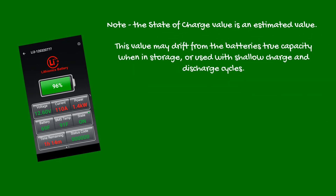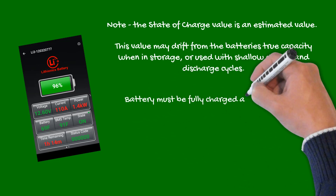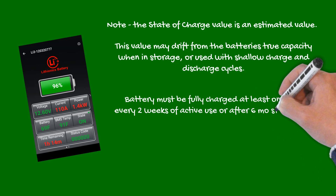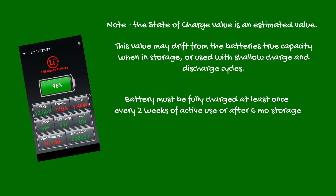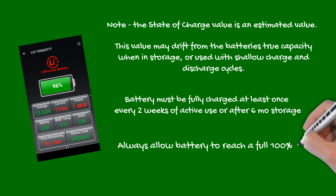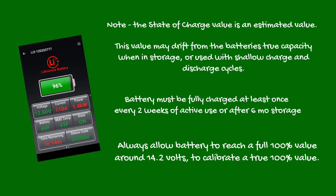To ensure that state of charge is accurate, the battery must be fully charged at least once every two weeks of active use, or once every six months when in storage. This allows the circuitry to calibrate a true 100% value as it reaches around 14.2 volts.